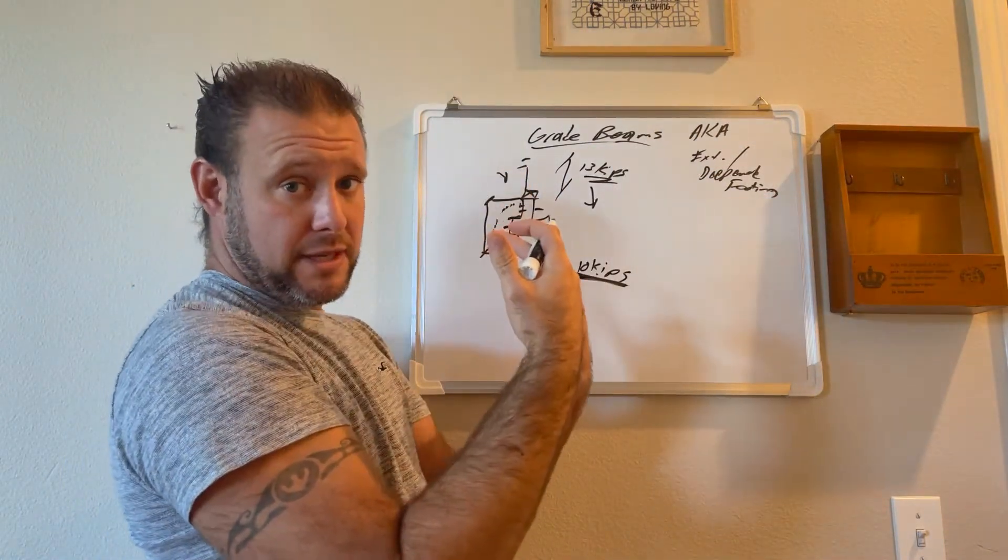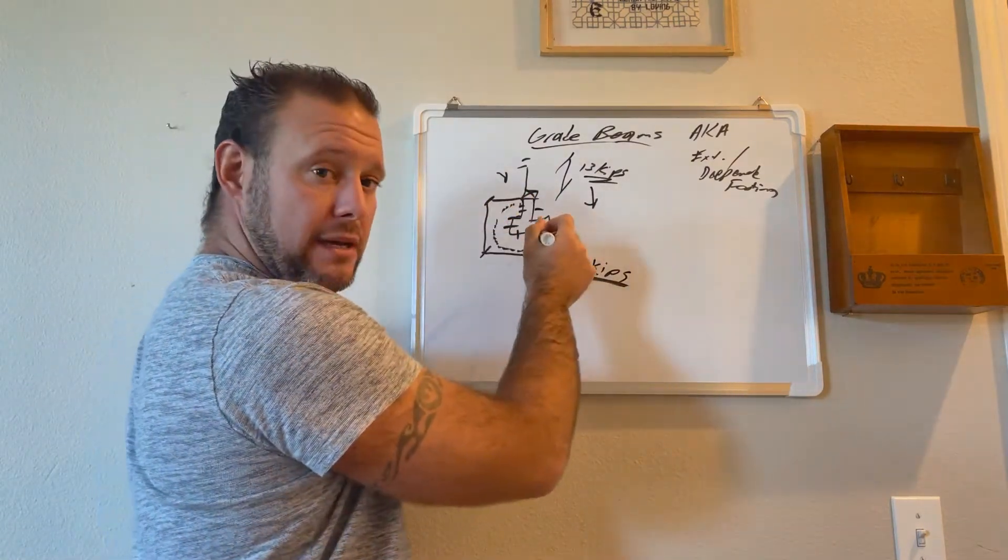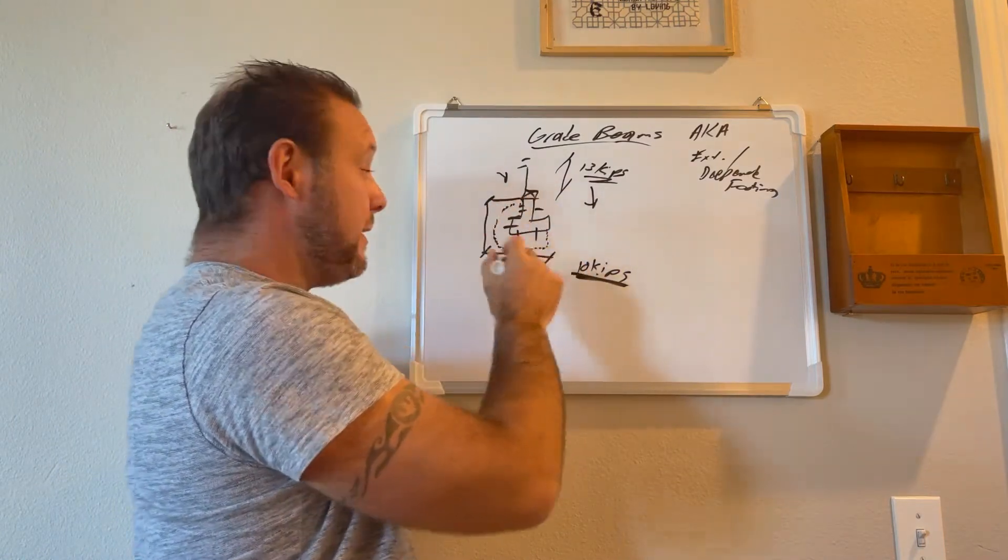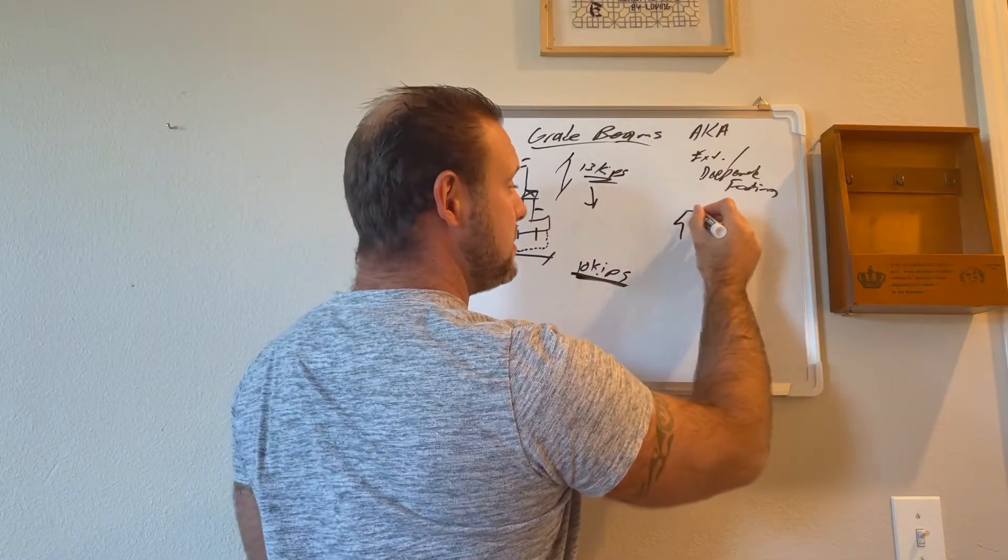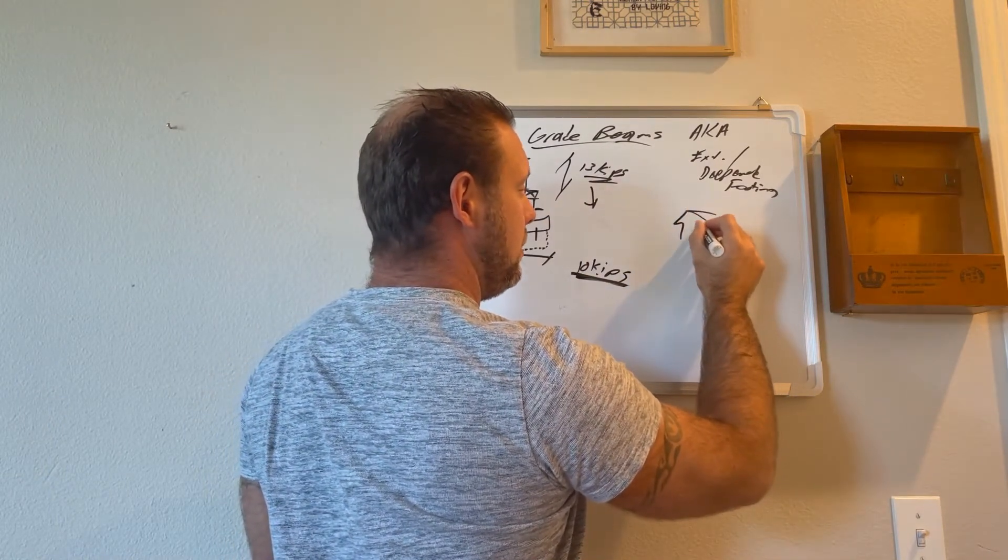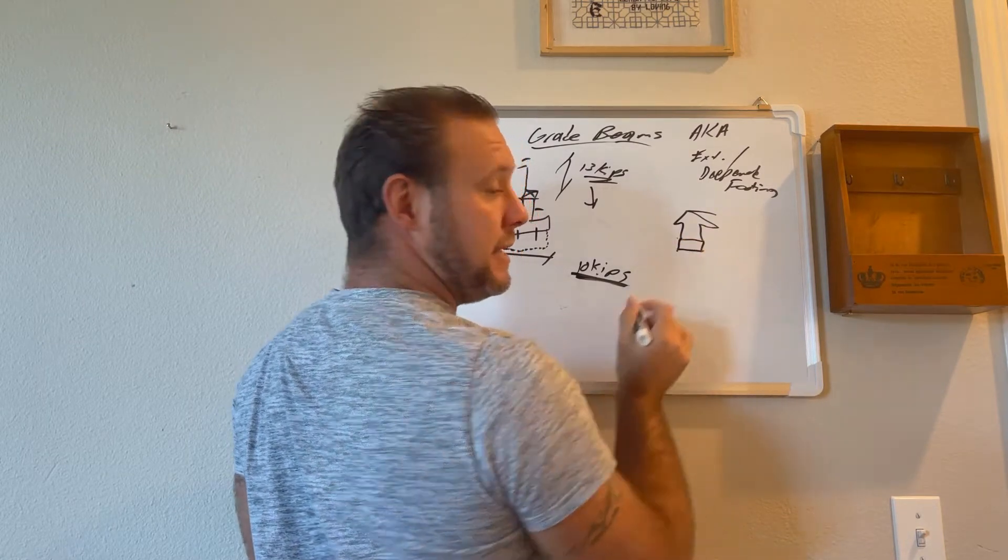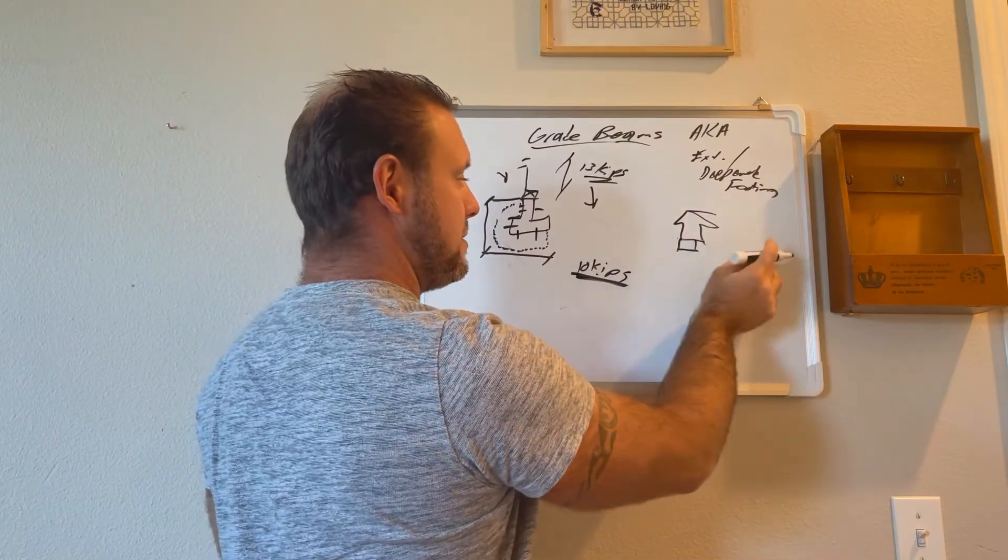So what you're doing though is you're adding this big concrete grade beam—all this weight. This is one section of the home if I'm looking at the side of the house. The grade beam goes along the entire side as long as the footing is, or the affected area is, right?